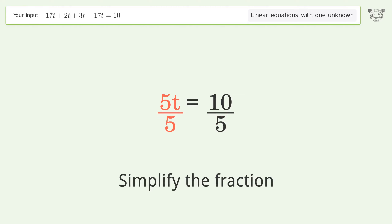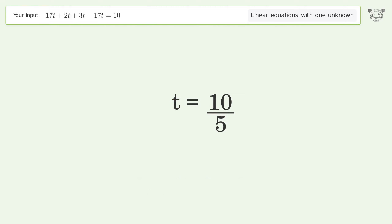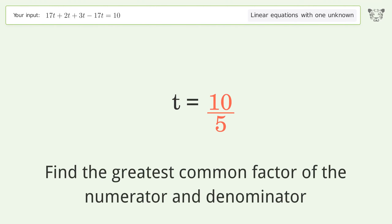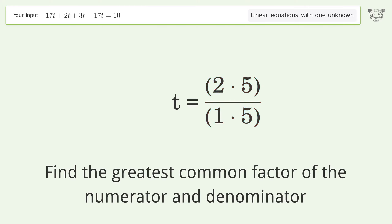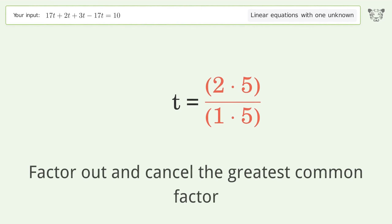Simplify the fraction by finding the greatest common factor of the numerator and denominator, then factor out and cancel the greatest common factor.